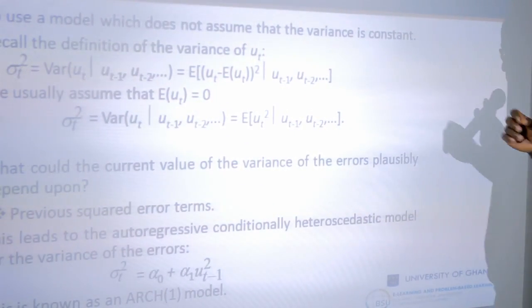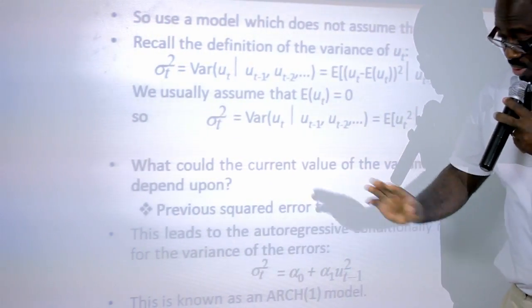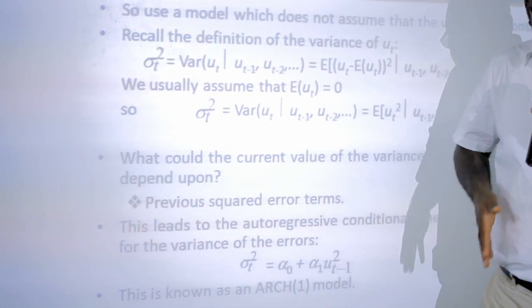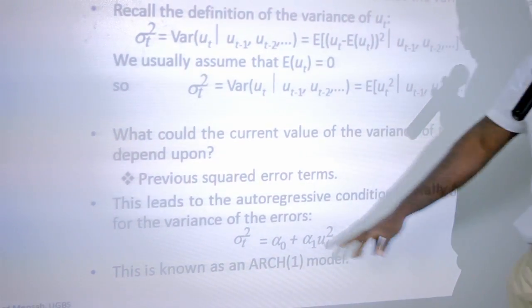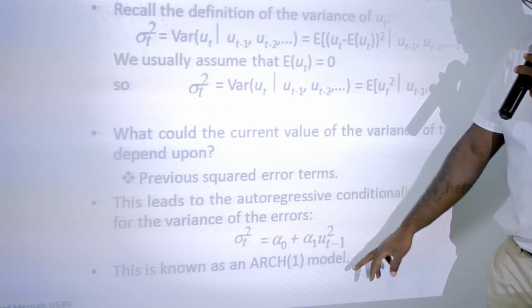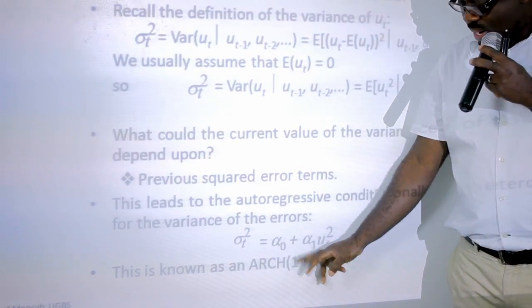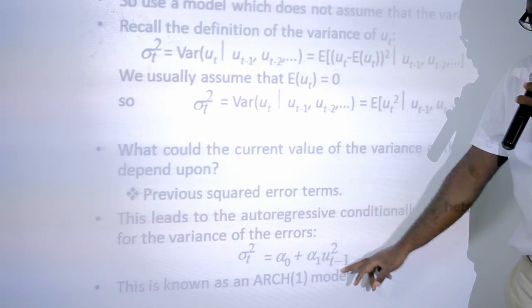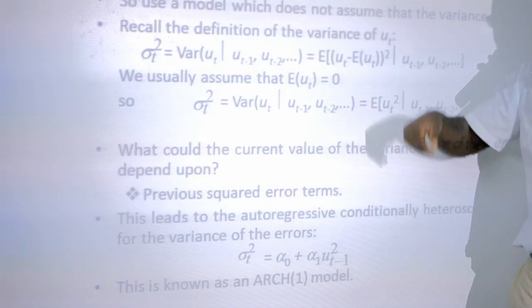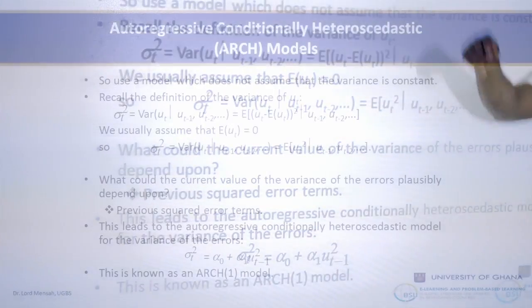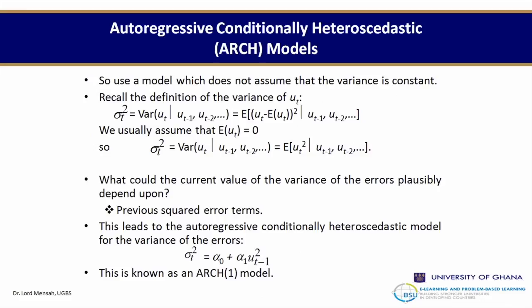This leads to the Autoregressive Conditional Heteroscedastic model — the ARCH model — for the variance of the error terms. The current value of the variance sigma_t depends on some constant plus alpha_1 times the lags of the squared error terms. This is known as ARCH(1) because we use only 1 lag.